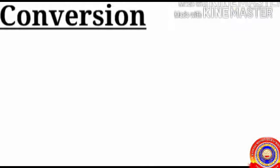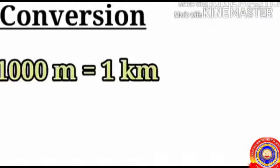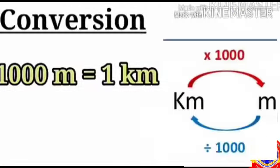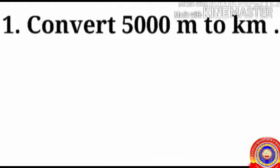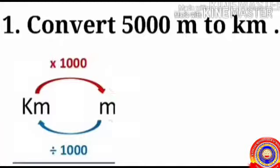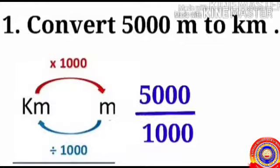Let's look at how to convert meter to kilometer. We know one thousand meters equals one kilometer. So to convert kilometer to meter, multiply by one thousand, and meter to kilometer, divide by one thousand. We have an example: convert five thousand meters to kilometers. To convert meter to kilometer, divide by one thousand — five thousand divided by one thousand equals five.